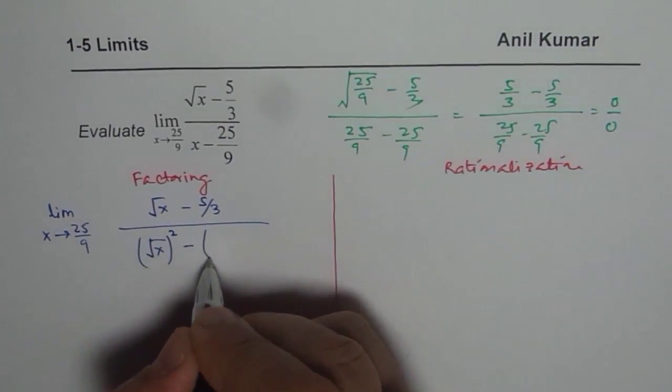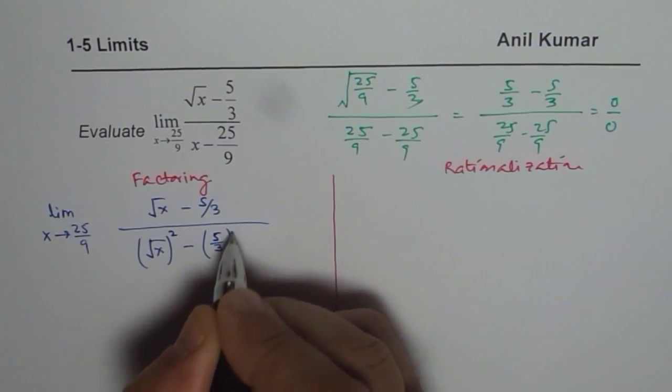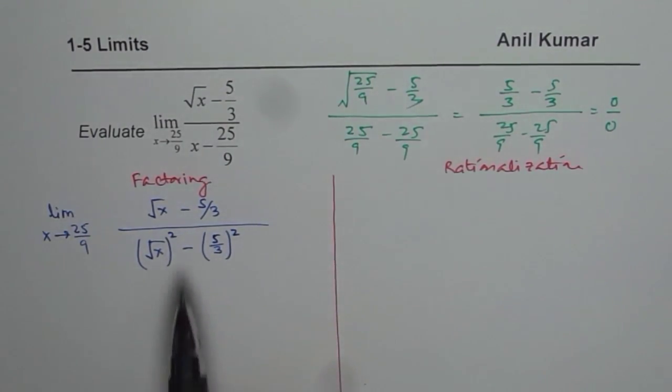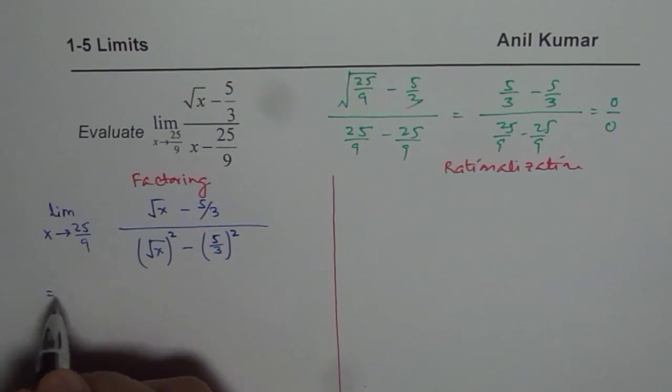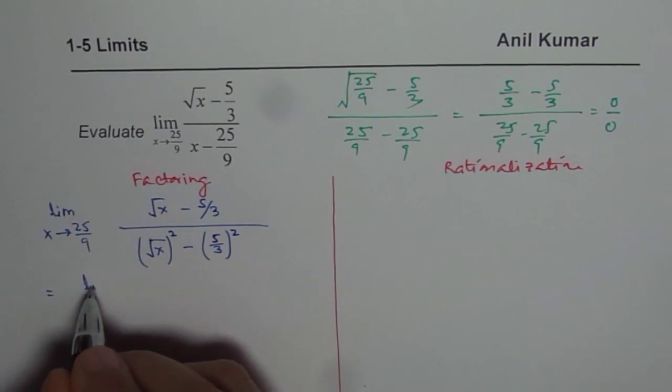Minus. We could write this as 5 over 3 square. You get the point. So we have difference of square in the denominator. And therefore, we could factor this with difference of square formula.